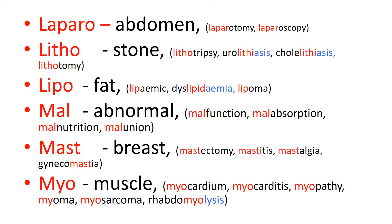'Mast' is to do with the breast. Mastectomy is surgical removal of a breast. Mastitis is inflammation of a breast, very often occurring as a complication of breastfeeding from bacterial infection — it tends to respond well to antibiotics but is a painful condition. Mastalgia — 'algia' means pain — is pain in a breast. Gynecomastia is breast development in men, which can occur with excess alcohol, as a side effect of some medications, or as a feature of obesity.